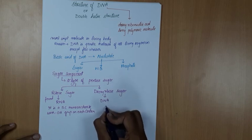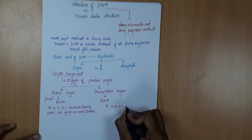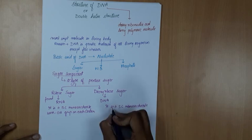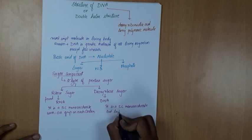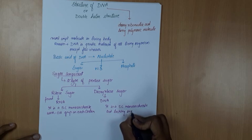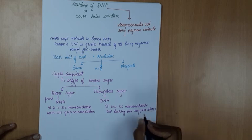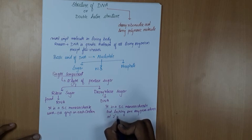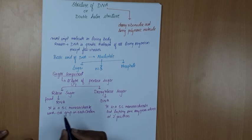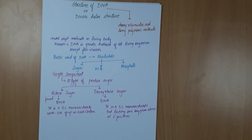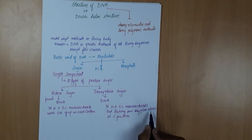Deoxyribose sugar is also a 5-carbon monosaccharide, but it is lacking one oxygen atom at the second position. So the only difference is that a hydroxyl group is present on each carbon of ribose sugar in RNA, while in deoxyribose sugar the second position is lacking one oxygen atom.